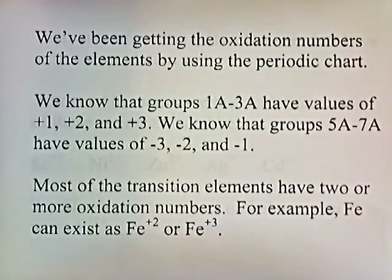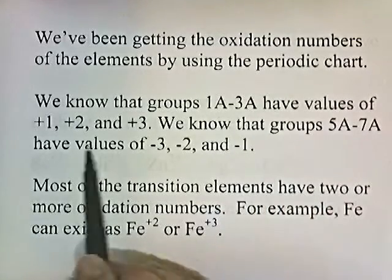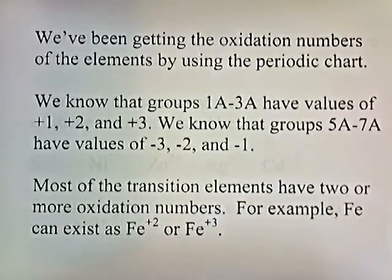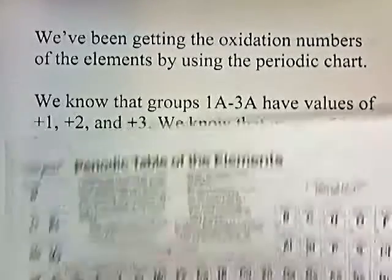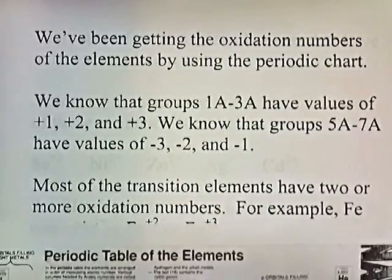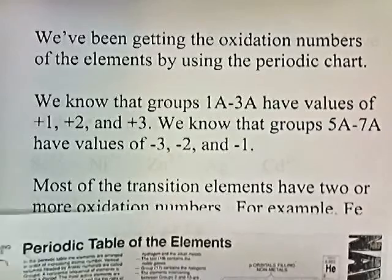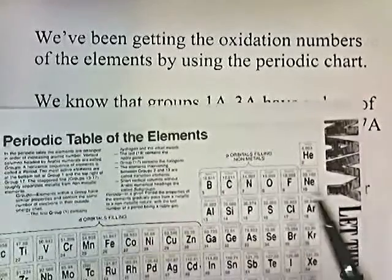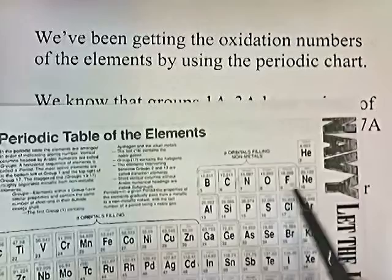We get oxidation numbers from the periodic chart. Groups 1A through 3A have values of plus one, plus two, and plus three respectively. Groups 5A through 7A have values of negative three, negative two, and negative one respectively.